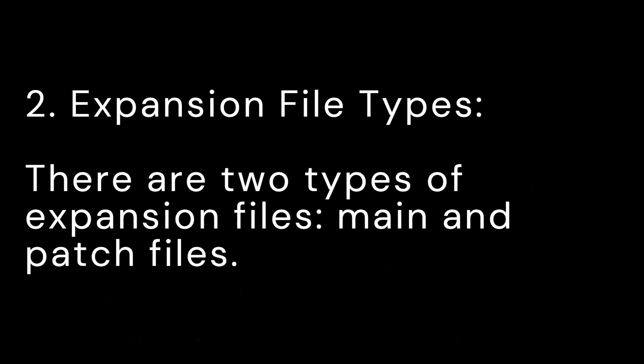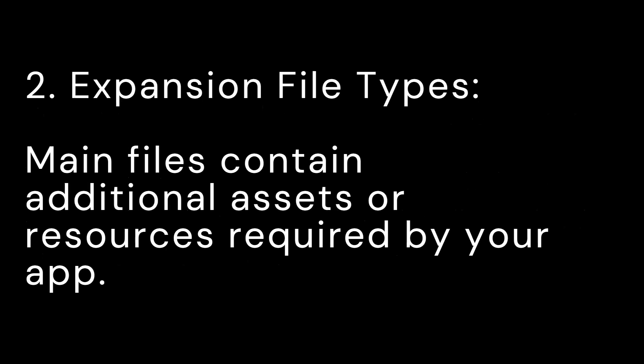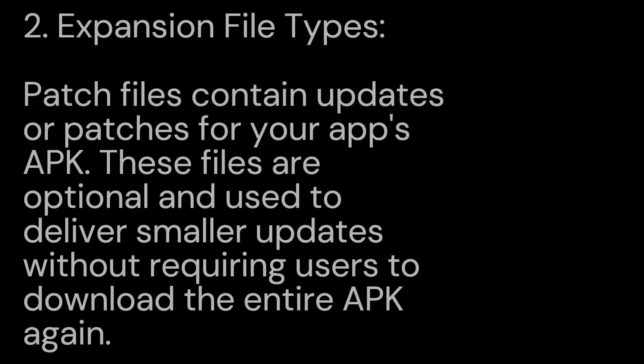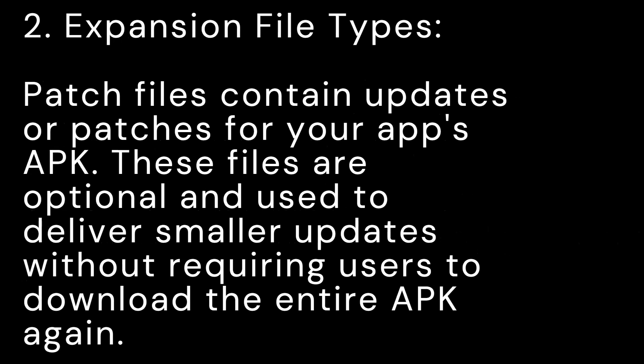2. Expansion File Types. There are two types of expansion files: main and patch files. Main files contain additional assets or resources required by your app. Patch files contain updates or patches for your app's APK. These files are optional and used to deliver smaller updates without requiring users to download the entire APK again.